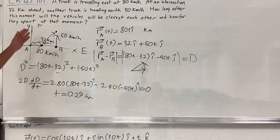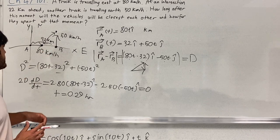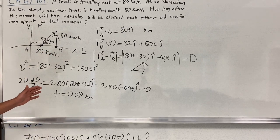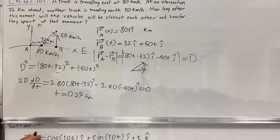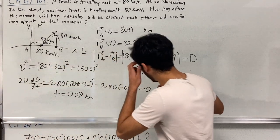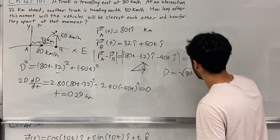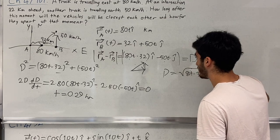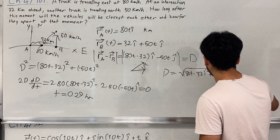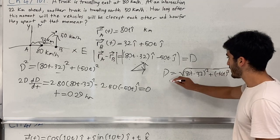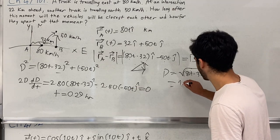Now that I have t ≈ 0.29 hours, I substitute this back into the distance formula: D = √[(8t − 32)² + (−50t)²]. Evaluating at t = 0.29, the minimum distance equals approximately 17 km. That is how far apart the two trucks are at their closest moment.